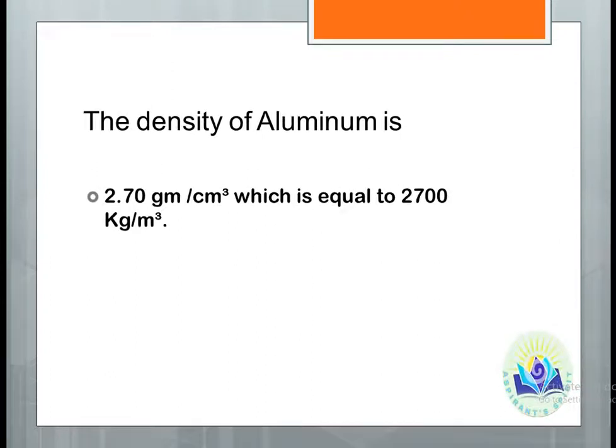The density of aluminum is 2.70 gram per centimeter cube which is equal to 2700 kg per meter cube.